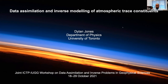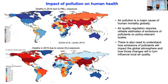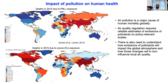Much of the motivation for this work is due to the fact that human activity has profoundly changed the composition of the atmosphere, with implications for climate as well as air quality. It is now well established that air pollution is a major cause of human mortality globally. The images here from the Cohen et al. study show this unfortunate reality. The top panel shows deaths in 2015 due to fine particulate matter (PM 2.5) exposure — these are small particulates less than 2.5 microns in diameter.